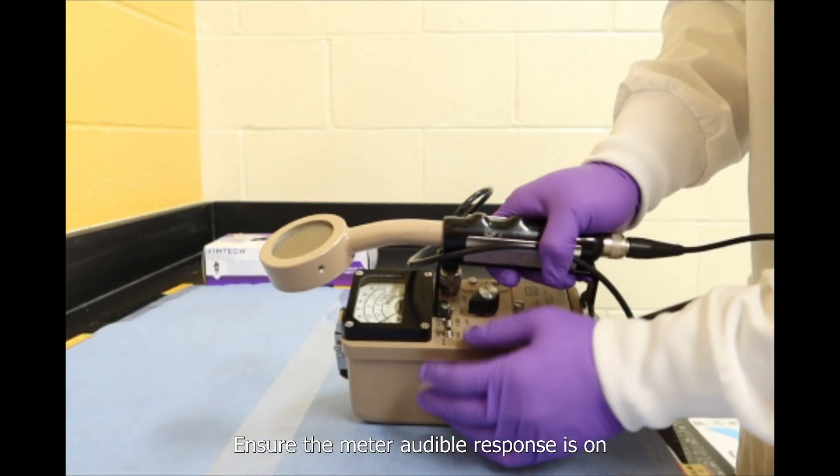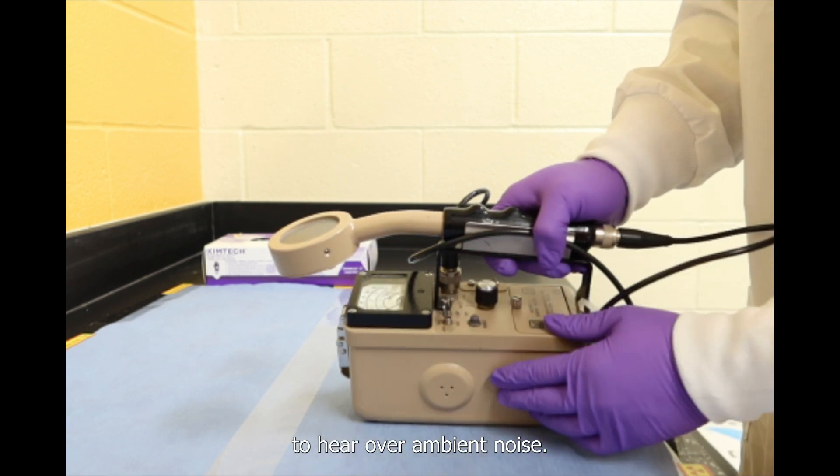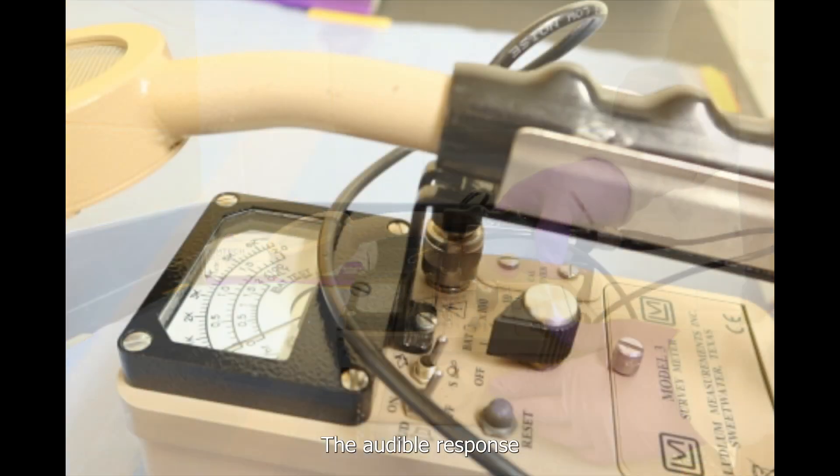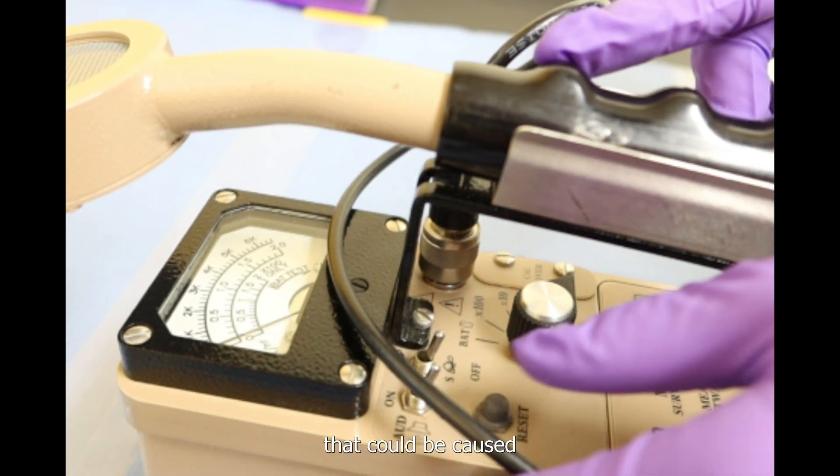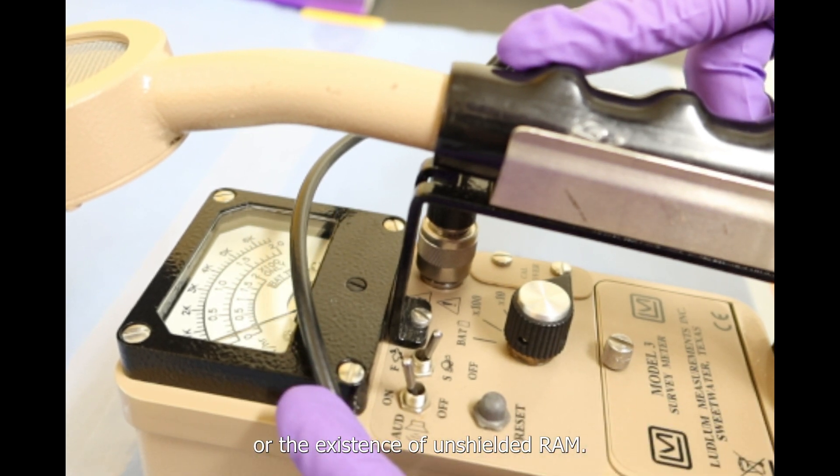Ensure the meter audible response is on and the volume is loud enough to hear over ambient noise. The audible response is an important indicator of radiation level change that could be caused by a contamination event or the existence of unshielded RAM.